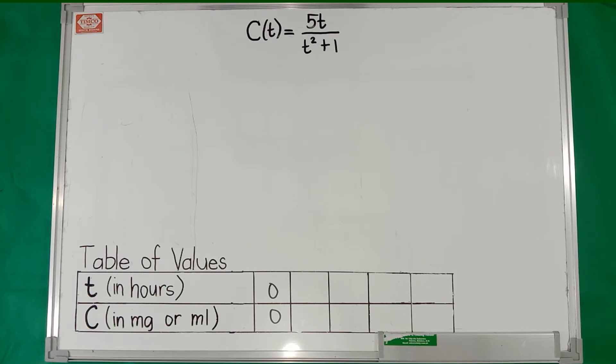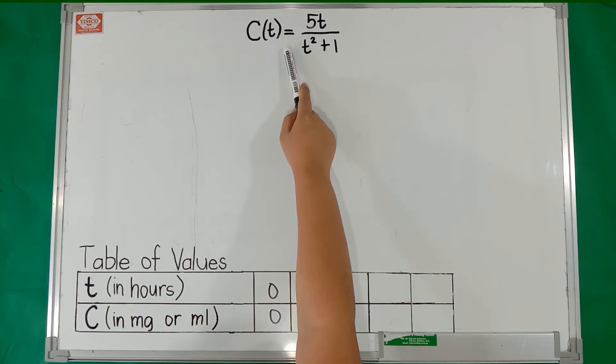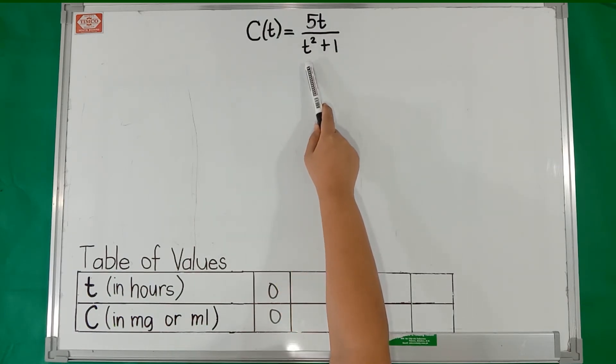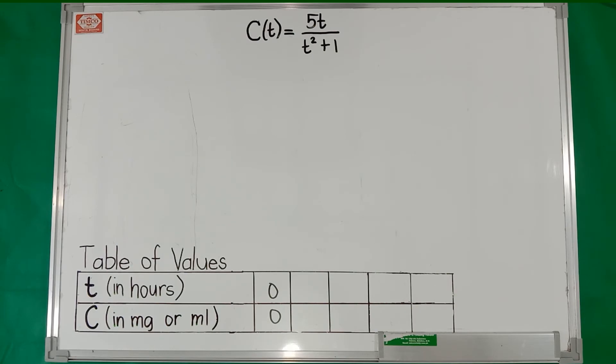In this problem, the function is given and it represents the concentration of a certain drug in the patient's bloodstream. And it is c(t) = 5t/(t² + 1). C stands for the concentration of a drug which means the absorption of the drug in the patient's bloodstream. And t stands for the time in hours after the drug was given to the patient.